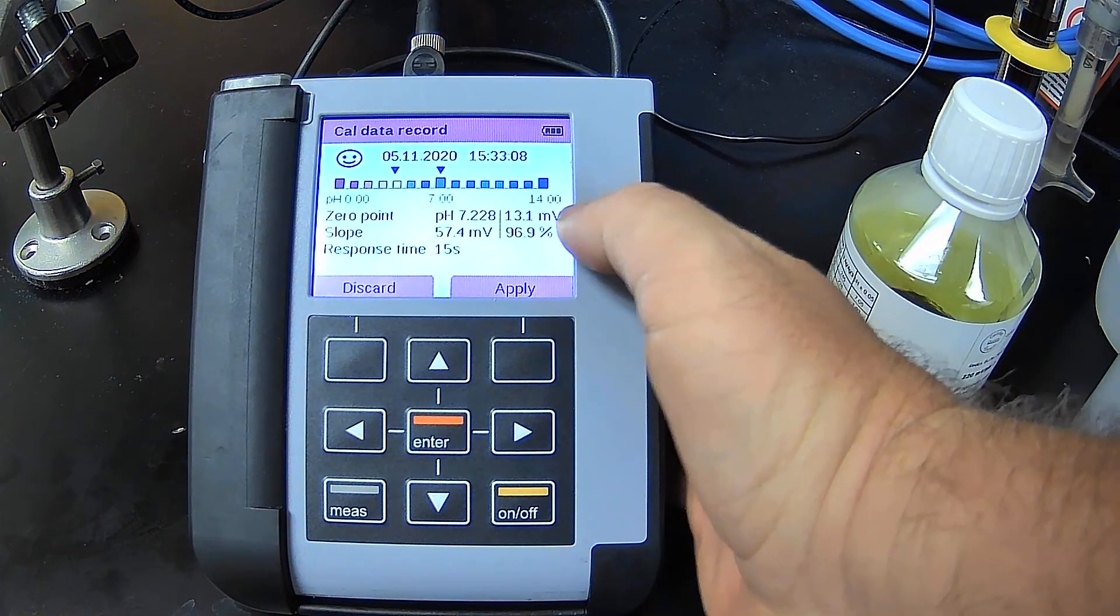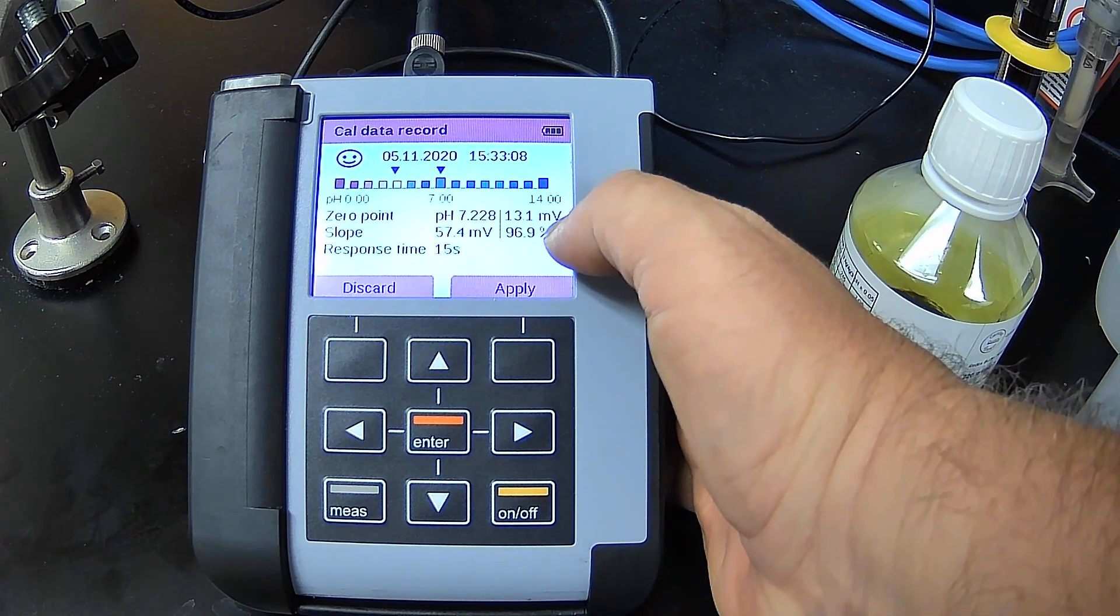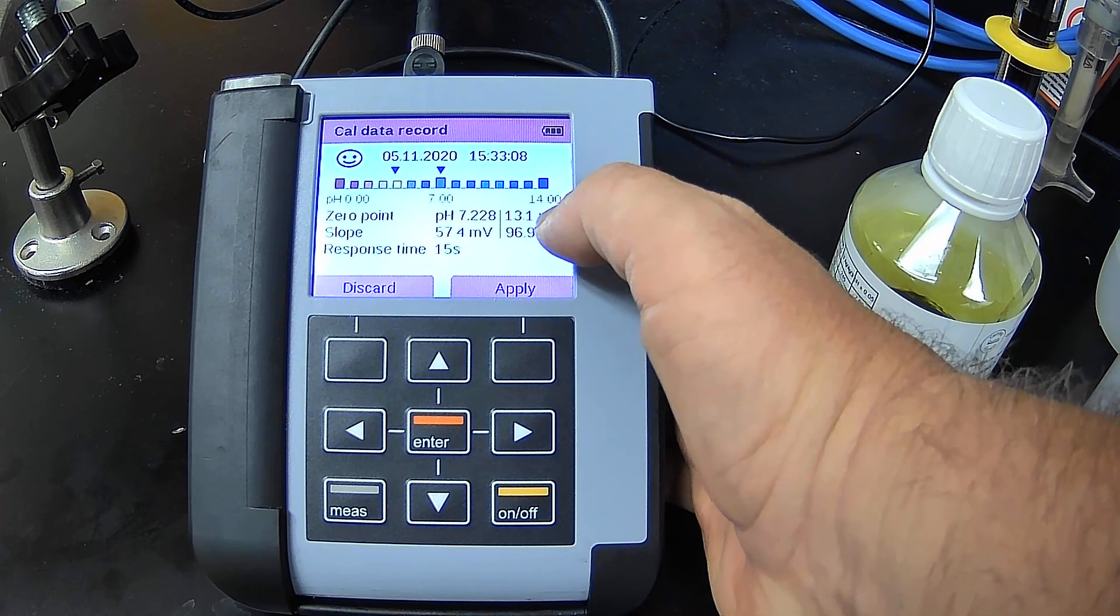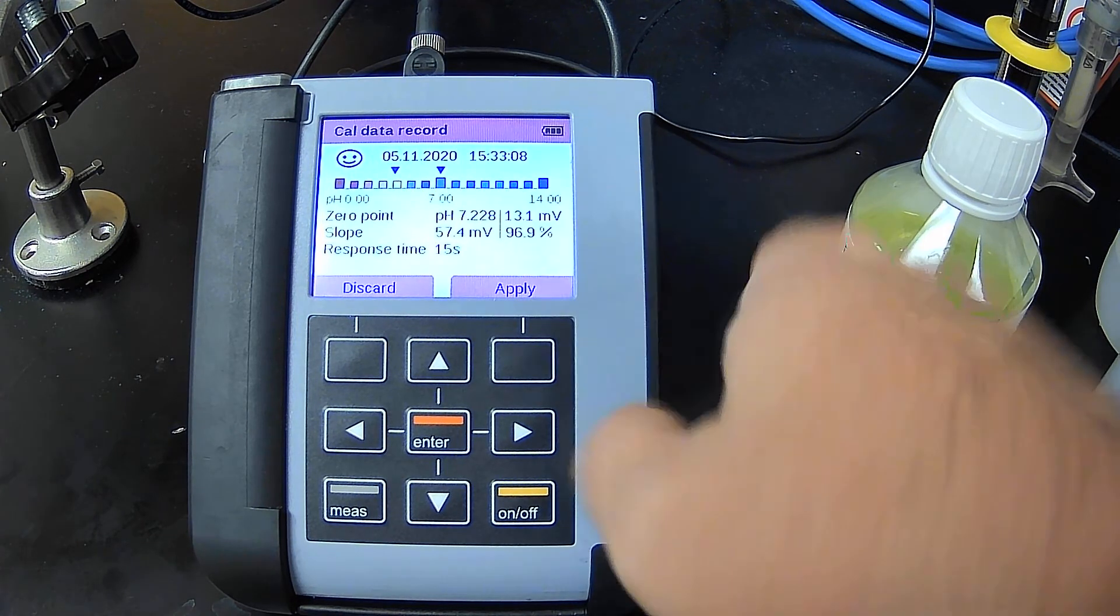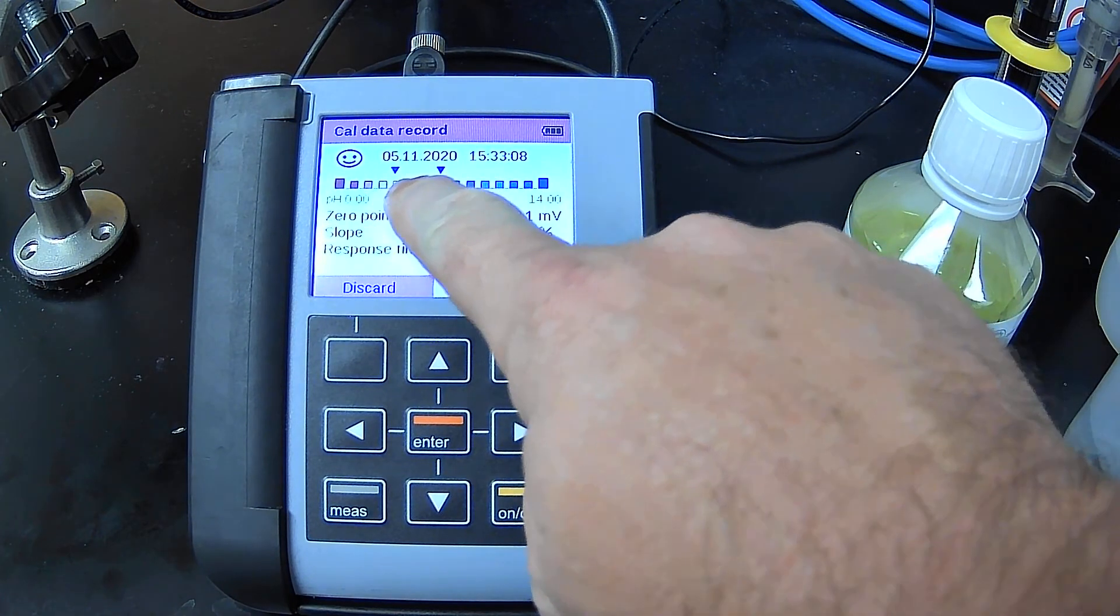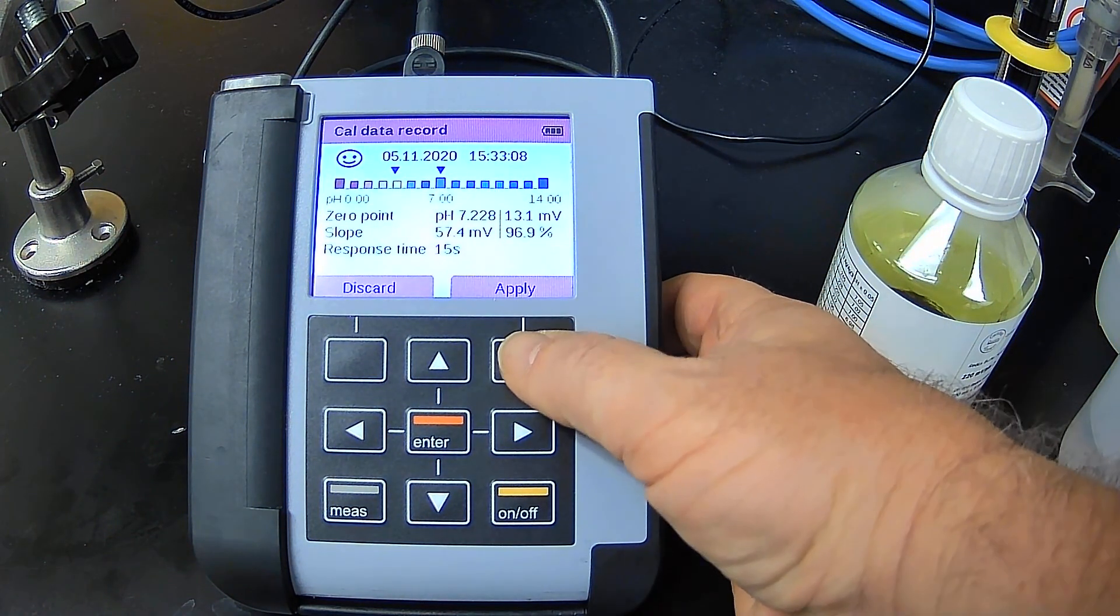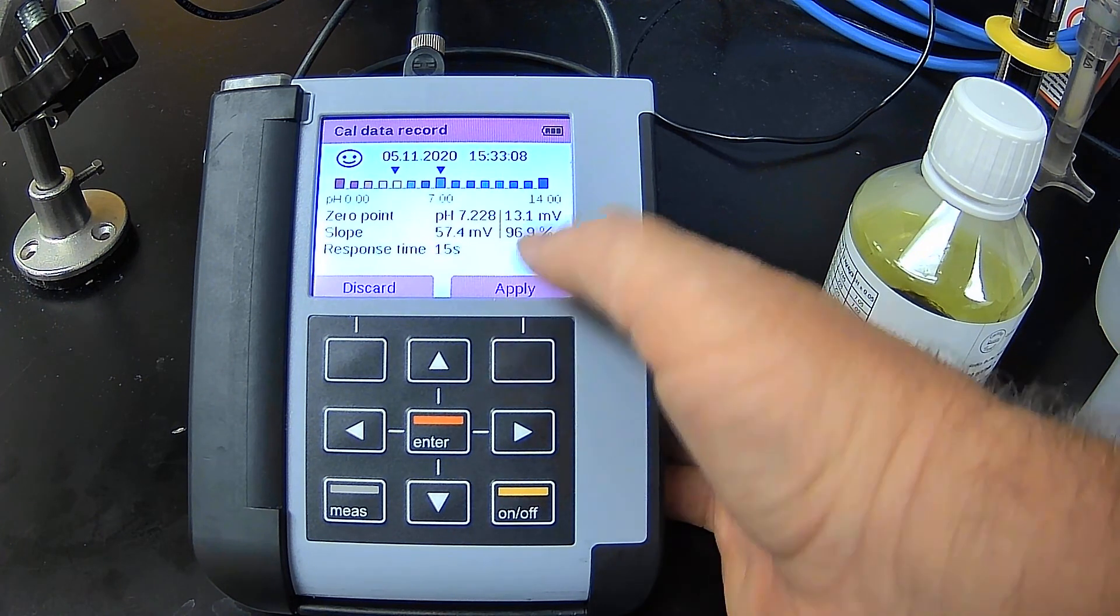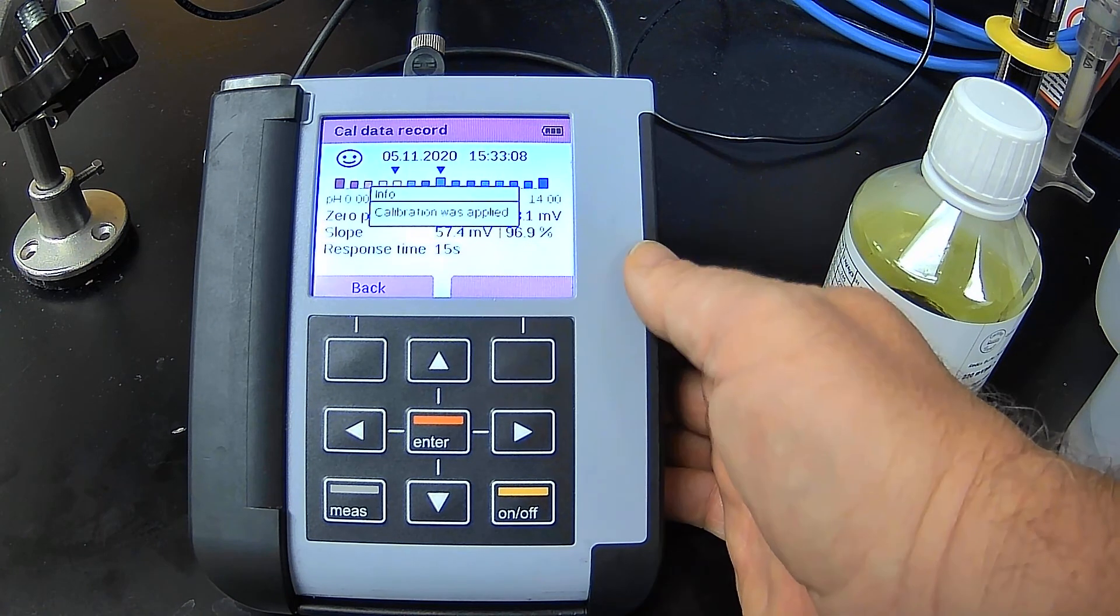Here we go. Here's the results of my pH 2-point manual calibration. So I've got a response time of 15 seconds, a slope of 96.9, a zero at 13.1 millivolts. It's showing me my two buffer values, 4 and 7, and it's giving me the smiley. So of course, if I don't hit apply, that calibration will not be put into the electrode or the adjustment won't take place. So remember, you have to hit apply.